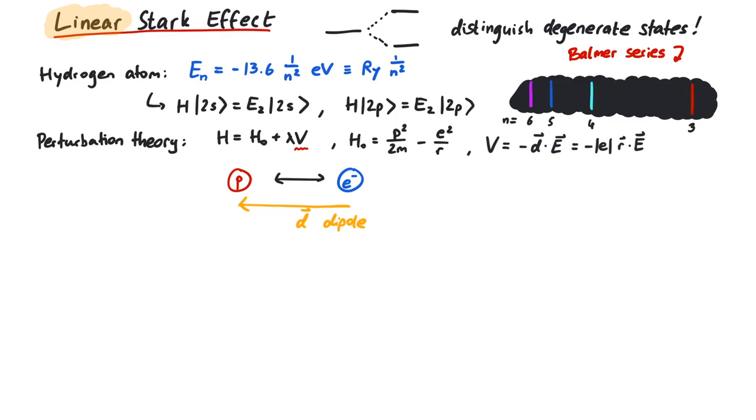In our case, d points from the electron to the proton, and q is the elementary charge of the electron. In perturbation theory, the first-order corrections to the energy are given by the eigenvalues of the perturbing potential.